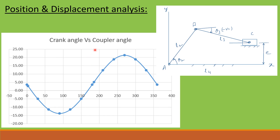In this plot, the crank angle is again on the horizontal axis and the coupler angle is on the vertical axis. In the first half of the graph — between 180 and 150 degrees — the coupler angle is negative, meaning it is below the horizontal line. For the rest of the positions, the coupler angle is above the horizontal line.